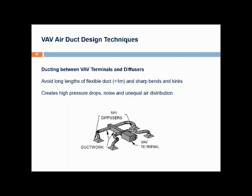For the ducting between VAV terminals and the diffusers, it is very common to use flexible air ducting, but flexible ducting has a high pressure drop. It is important to limit flexible ducting length to a maximum of two meters and to use metal ducting wherever possible. It is also important to avoid sharp bends and kinks in flexible ducting, which create large pressure drops. Sometimes on site installers leave more flexible ducting than needed in the ceiling, creating sharp bends and big pressure drops. Reducing pressure drop downstream minimizes noise and unequal air distribution to the diffusers.